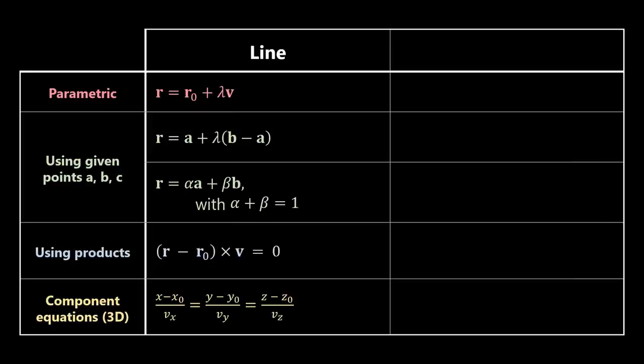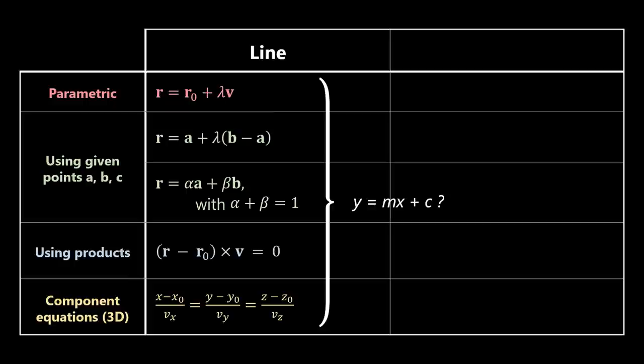Like the previous equation, this one is really a condition rather than a recipe to obtain position vectors. Now that we have all these equations for the line, it would be good for you to pause this lecture and go through all these different equations for a line, shuffling from one to another. For example, make up some arbitrary point r0 and some arbitrary vector v and find the equations of the line in all these different forms, or come out with two arbitrary points a and b, and write down the equation for the line crossing the two points in all these different ways.